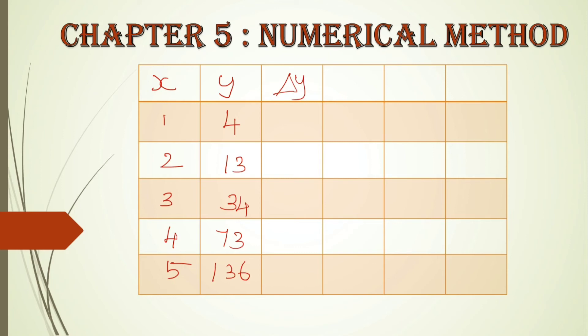Delta y is the first forward difference. The difference between 13 and 4 is 9. Next, 34 minus 13 = 21. Next, 73 minus 34 = 39. And 136 minus 73 = 63. So the delta y column gives us: 9, 21, 39, 63.